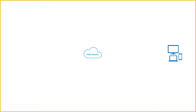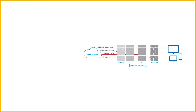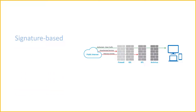An intrusion prevention system is placed inline in the flow of network traffic between source and destination, and usually sits just behind the firewall. There are several techniques that an intrusion prevention system uses to identify threats. The first is signature-based, which matches activity to signatures of well-known threats.